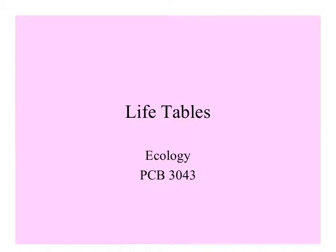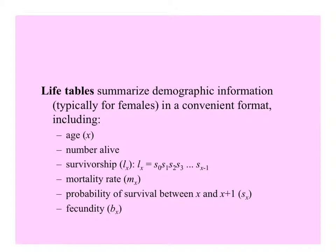Let's look at an important tool for understanding and analyzing population growth over time: life tables. A life table summarizes demographic information — often the focus is on females — in a convenient format. It includes a number of variables, including age, the number alive at each time interval, survivorship from time zero (L sub X), mortality rate (M sub X), the probability of dying at a certain age, the probability of survival from one interval to the next (S of X), and fecundity (B sub X).